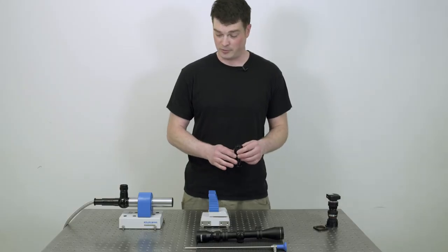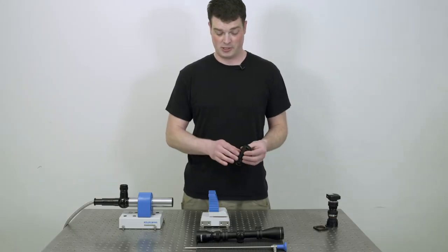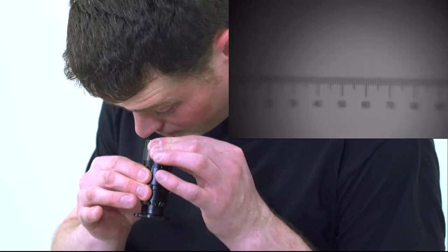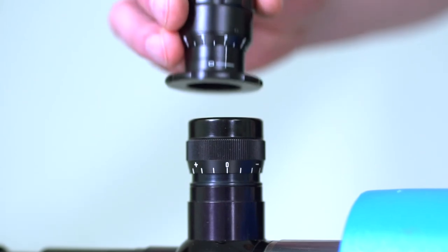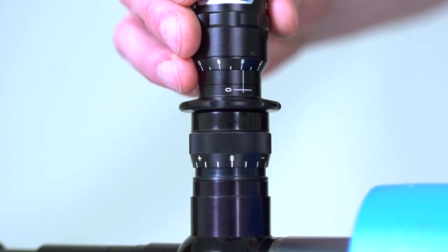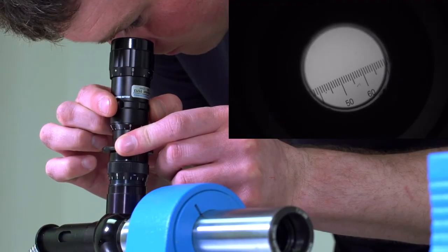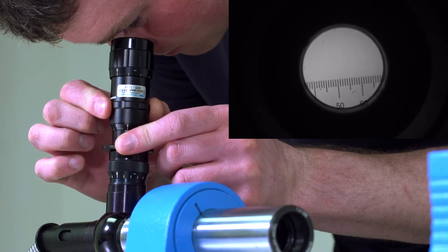Aside from the scales, the way it's used is basically exactly the same. Look through it and focus the eyepiece adjuster. Once you have that, you put it on your eyepiece that you're testing and you move the other adjustment.